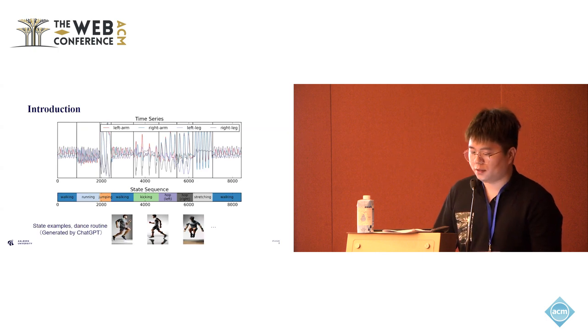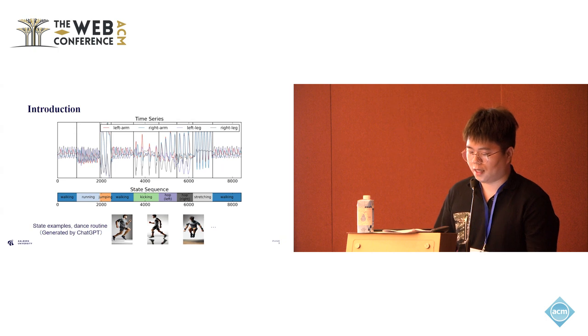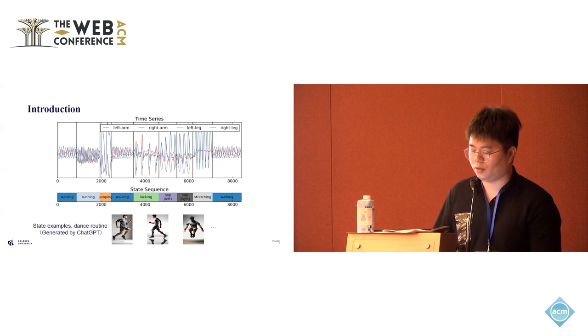In cyber-physical systems, sensors monitor the physical process and generate multivariate time series. This data is often complex and needs human effort to distinguish the underlying states. For example, consider MTS corresponding to a dance routine, which is collected using an accelerometer on a person's arms and legs. The aim of state detection is to segment the MTS and assign each segment with a state, such as walking, running, jumping, or hopping.